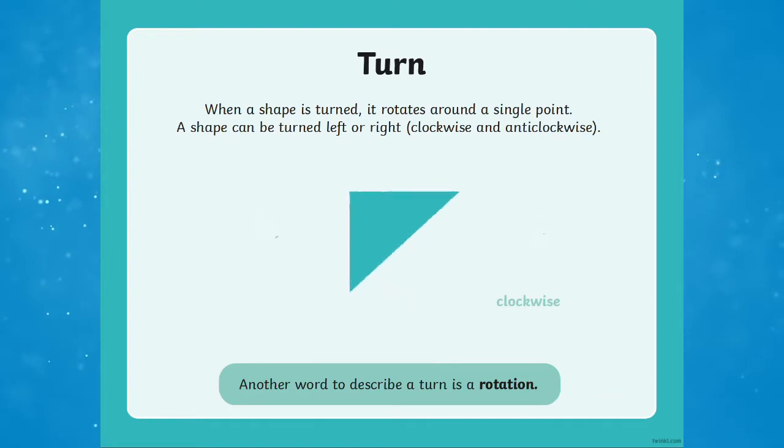When a shape is turned it rotates around a single point. This can be to the left or the right, otherwise known as clockwise or anti-clockwise. They can be turned a little or they can be turned a lot.